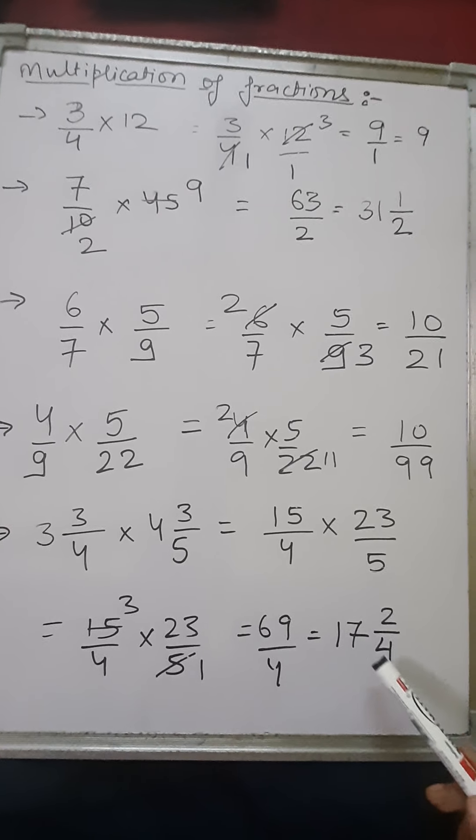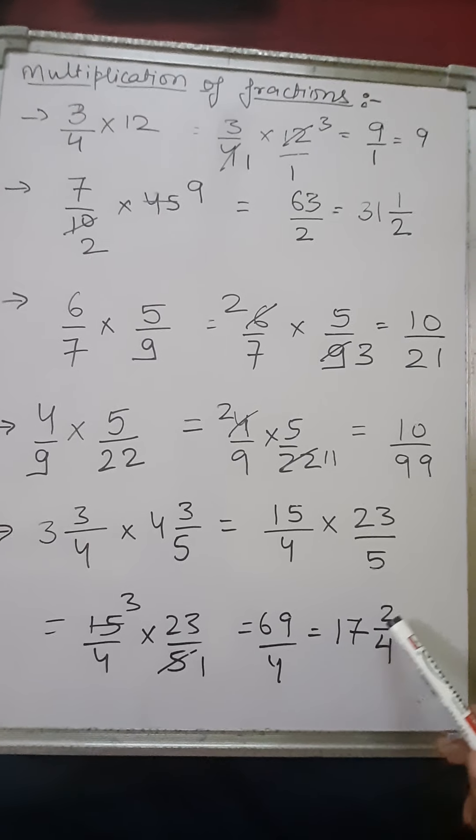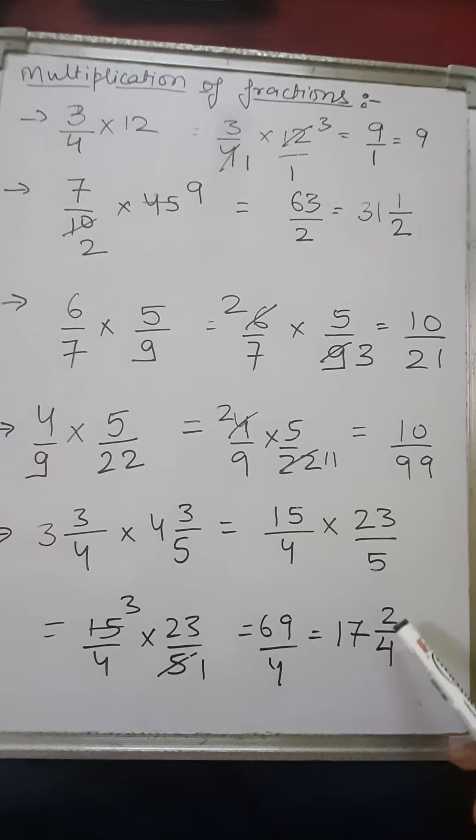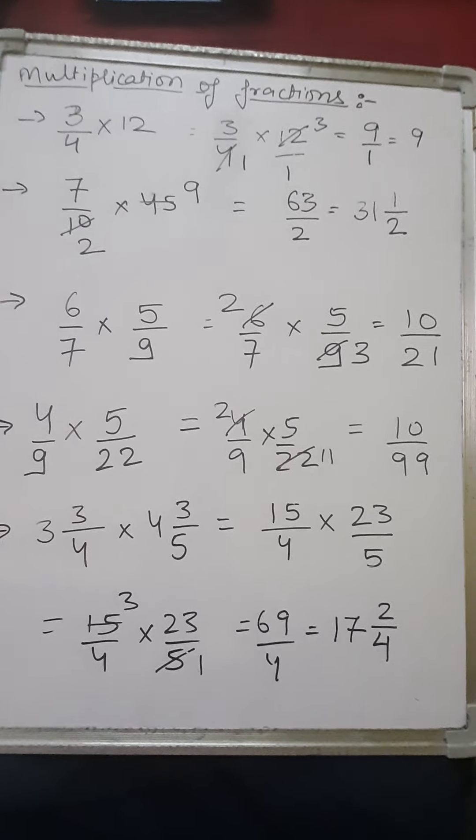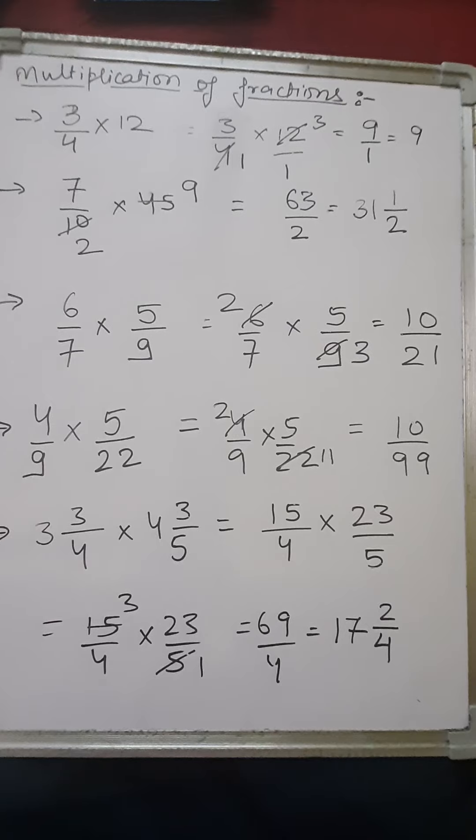So what we'll write, we'll convert this improper fraction into mixed fraction by dividing the numerator from denominator. So when you divide, you will get 17 as quotient and 2 will be the remainder, so the mixed fraction will be 17 wholes 2 by 4. Understood, children? No doubt.